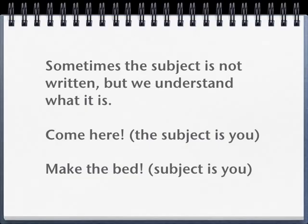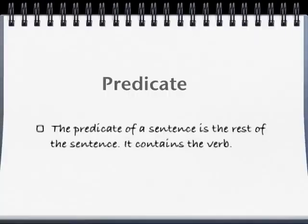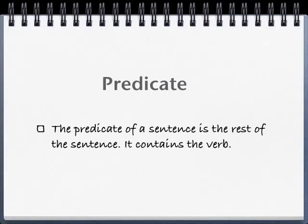Sometimes the subject is not written, but we understand what it is. For example, short sentences like 'come here' — the subject is you. It's just been shortened. We could say 'you come here,' but that isn't what the person said, so the subject is understood to be you. Similarly, 'make the bed' — once again, the subject is you. The predicate of the sentence is the rest of the sentence and it contains the verb.